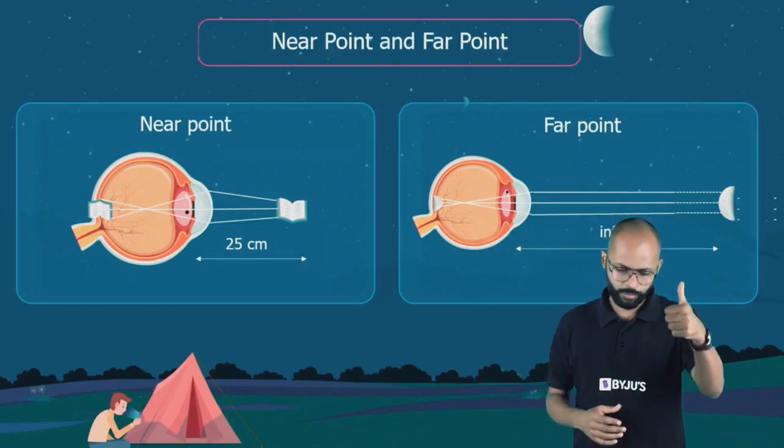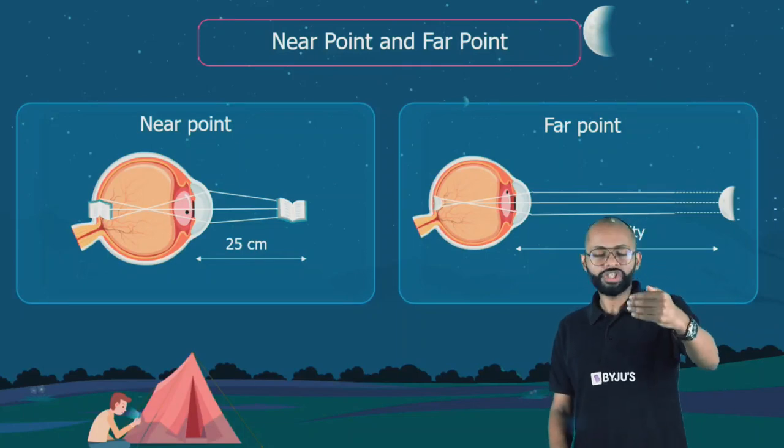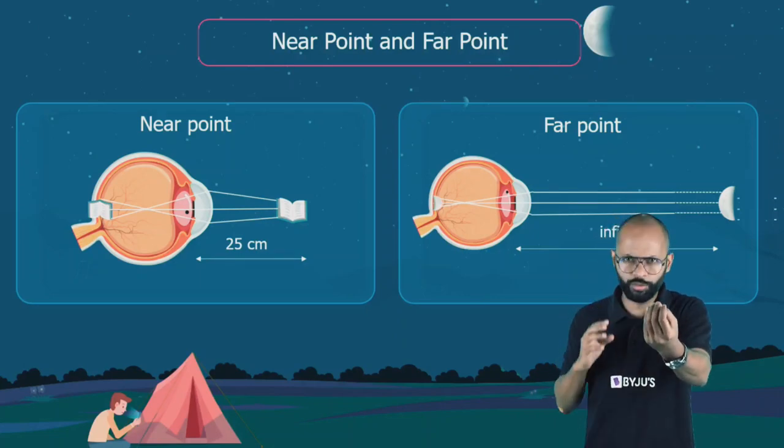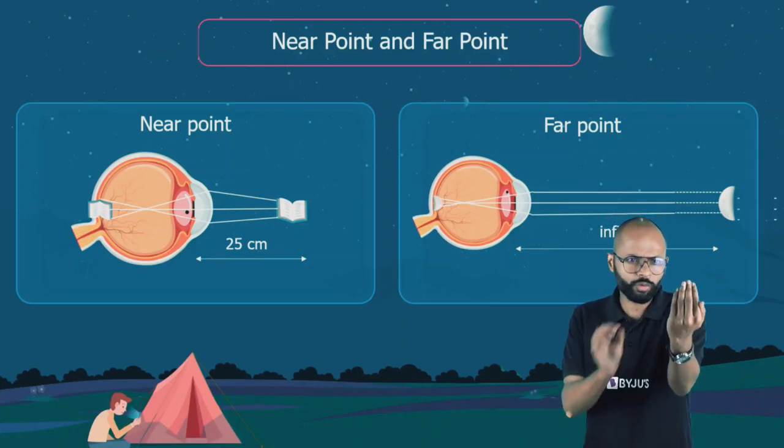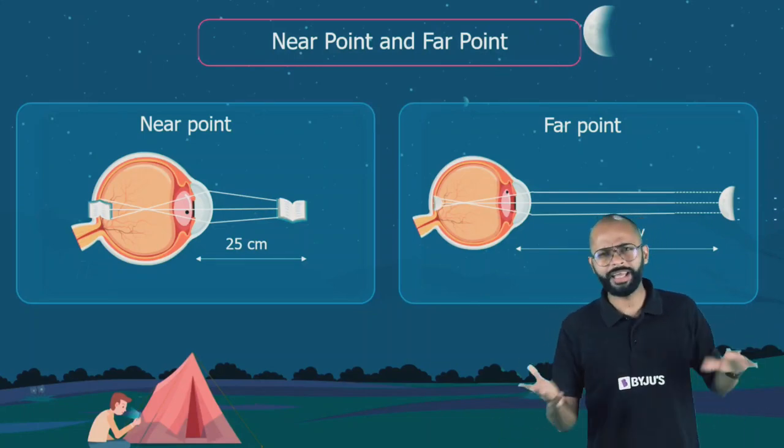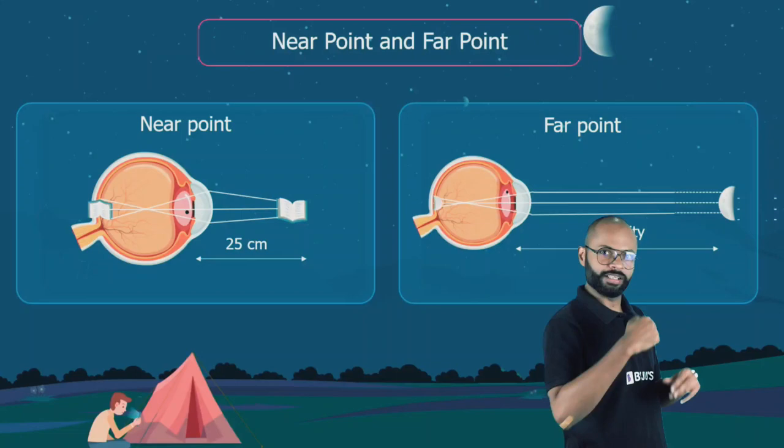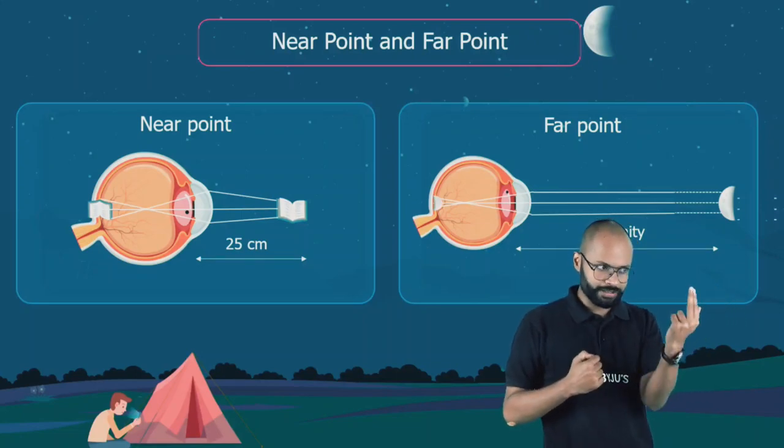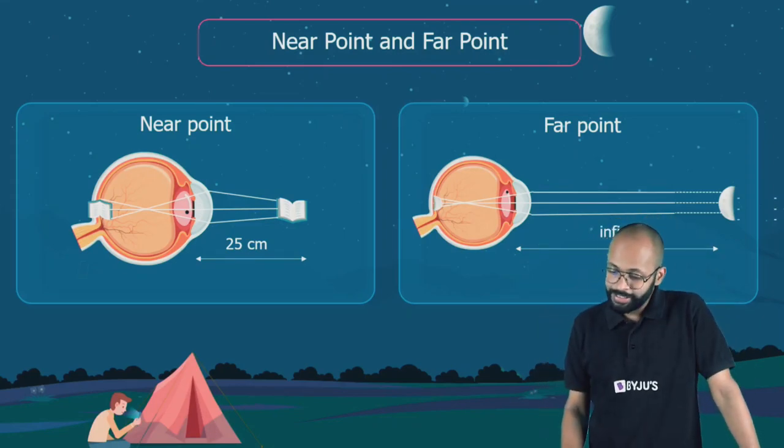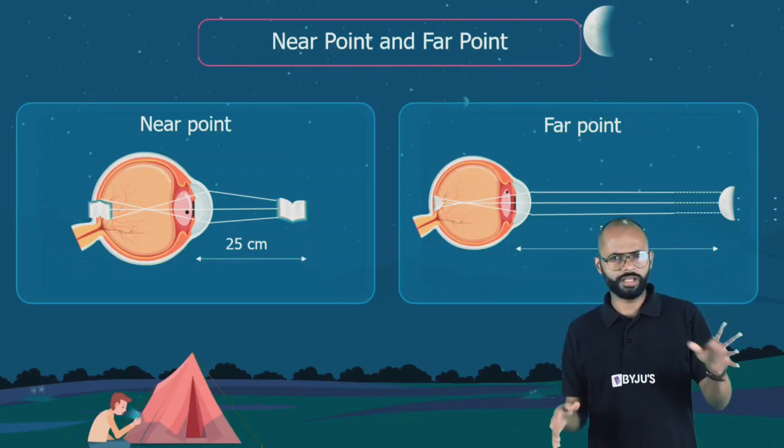Let's start with very simple things. Near point and far point. What is a near point? Near point matlab, jo paas hai. The point at which if you keep an object is clearly visible to you. The nearest point we can keep so that the object is clearly visible. Near point is 25 centimeters. So for a normal eye, we say 25 centimeters is the near point.